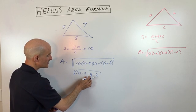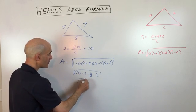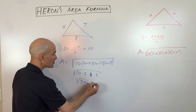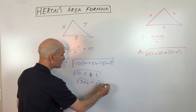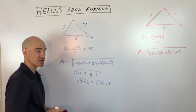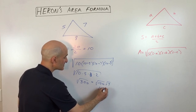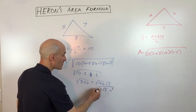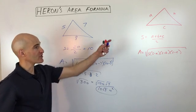That's, let's see, 15, 30, 300, so square root of 300, which equals 100 times three, the square root of 100 times the square root of three, so that comes out to 10 square root of three units squared, and that's our exact area for the triangle.